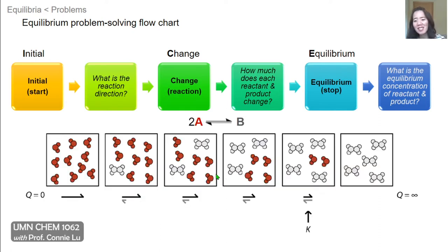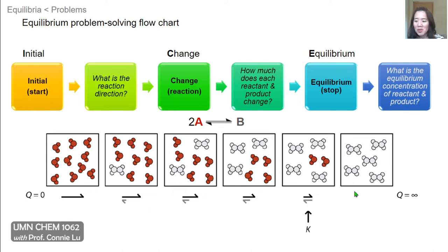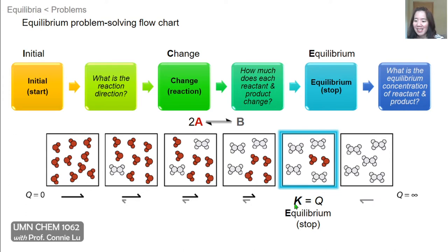Here's a visual illustration of what this type of problem might look like. We're given the chemical equation where two molecules of A turns into one molecule of B, and we're given the equilibrium constant for this reaction. This set of images represents a continuum of possible Q values. Q is the reaction quotient, and it can range from 0 to infinity. The reaction can proceed from any of these starting points, but will always stop at equilibrium when Q is equal to K.